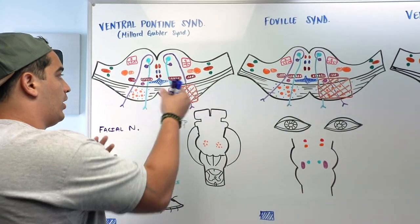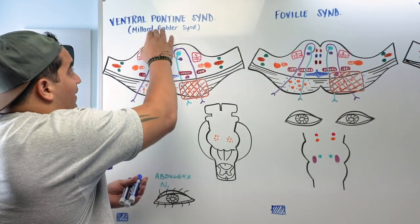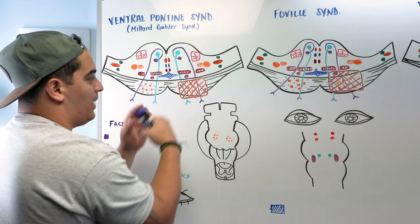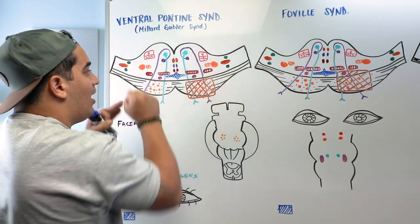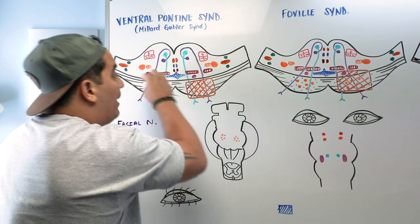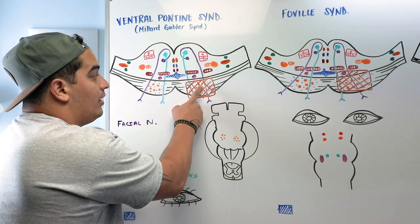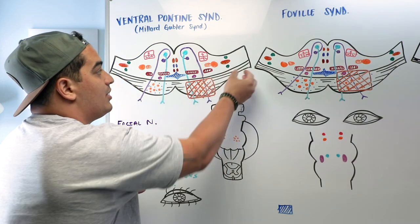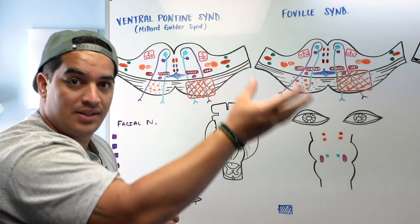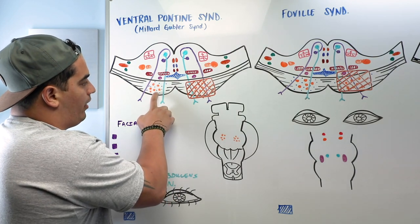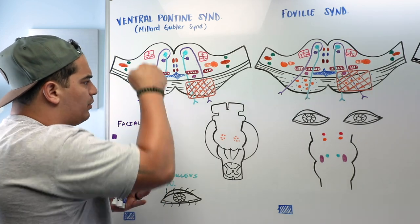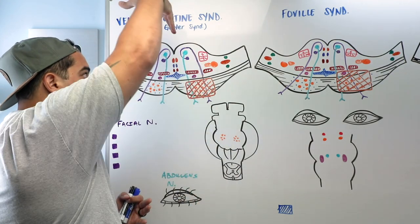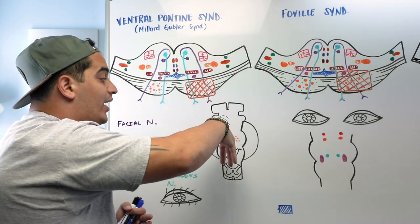With ventral pontine syndrome, or Millard-Gubler syndrome, there's a lesion in the ventral aspect of the pons — called the base of the pons or basilar part. The structures involved include the pontine nuclei, the pontocerebellar fibers, and the middle cerebellar peduncles connecting the pons to the cerebellum. We also have corticospinal and corticonuclear (corticobulbar) fibers coming from the cortex going down to the spinal cord or to cranial nuclei in the medulla.